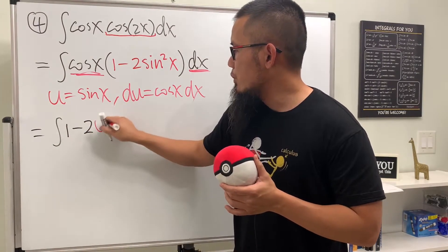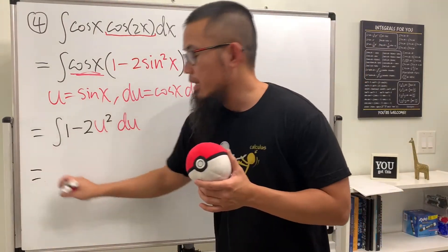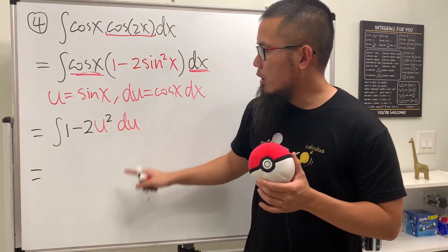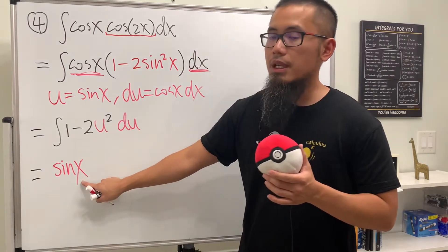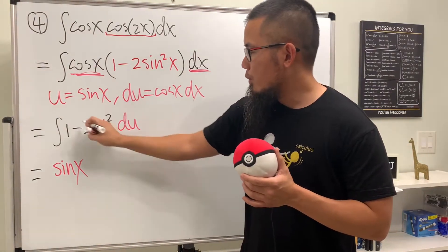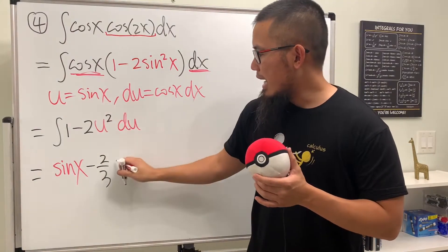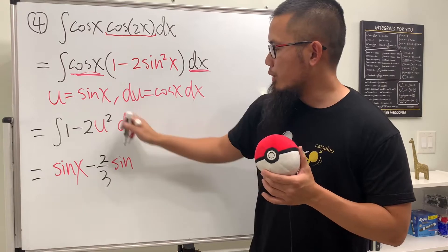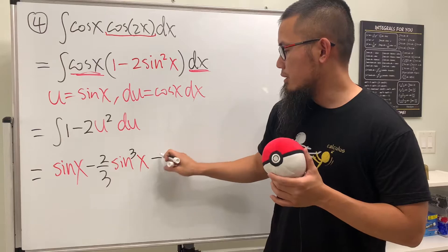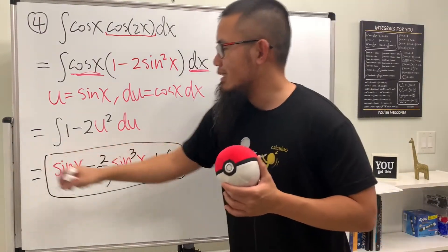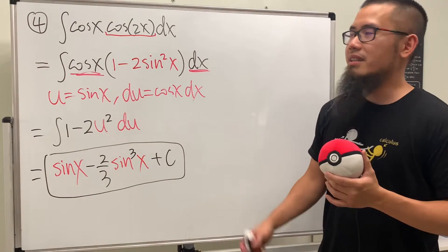So we are looking at the integral of one minus 2u squared times du. Integrating 1 gives u which is sine x. Integrating this gives minus two-thirds u cubed, which is minus two-thirds sine cubed x, plus c. That's it for number four. If you use the right identity, the integral will be really easy.